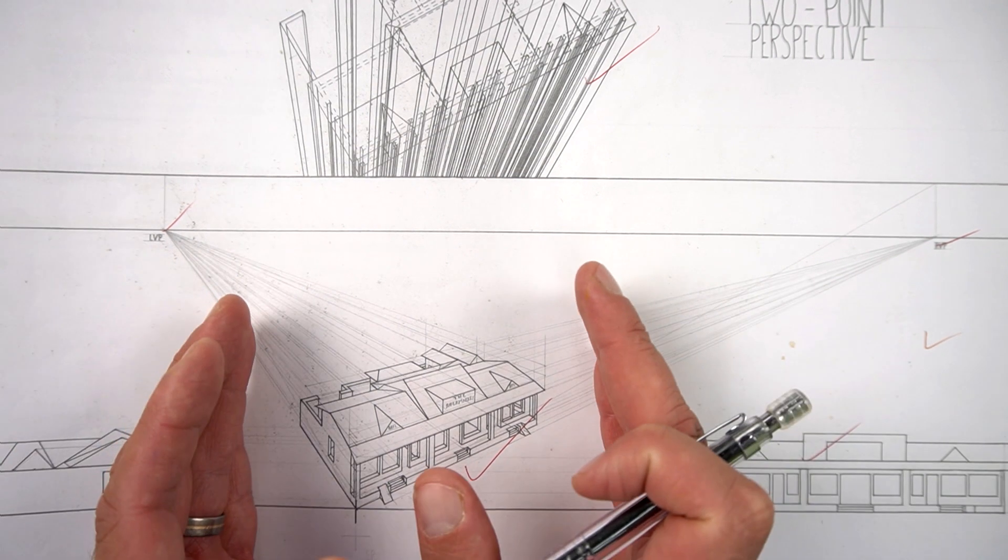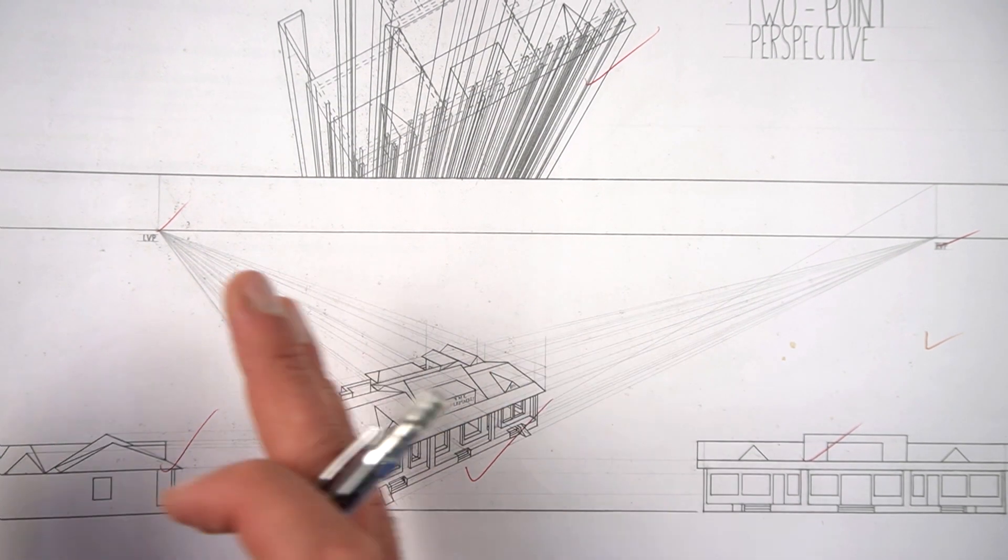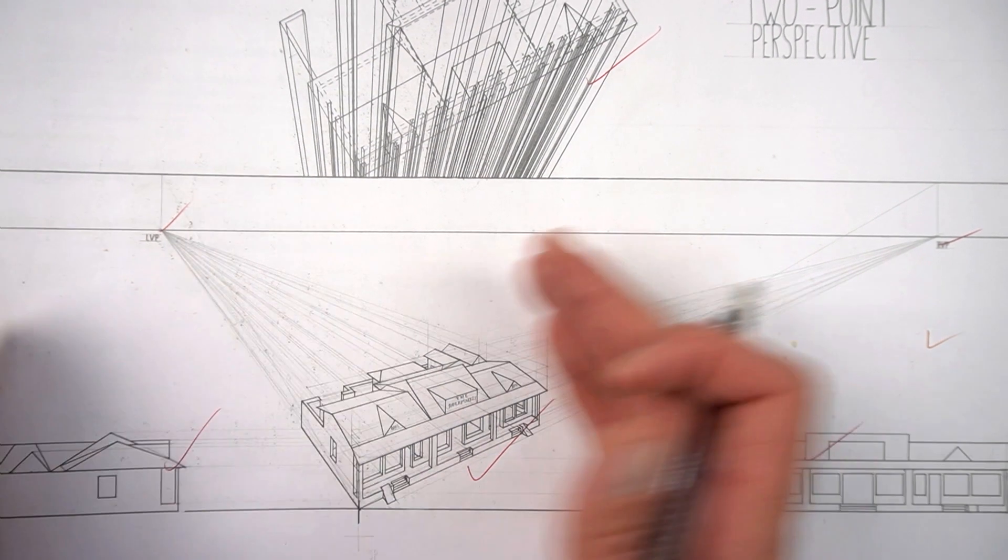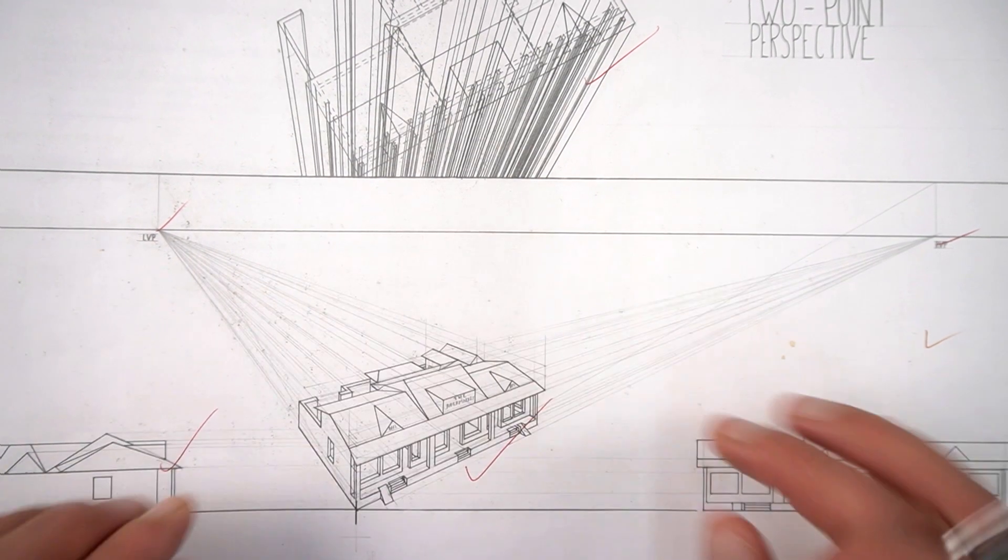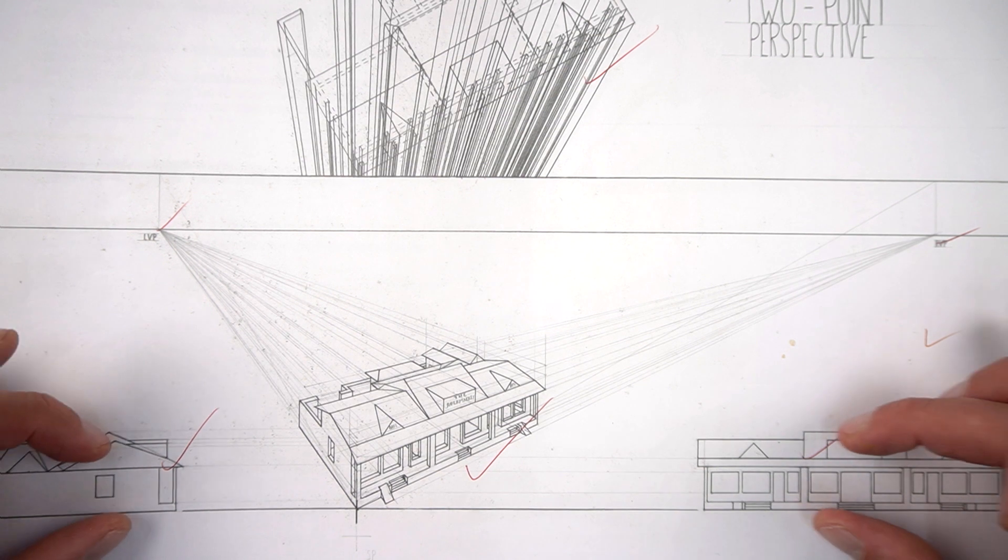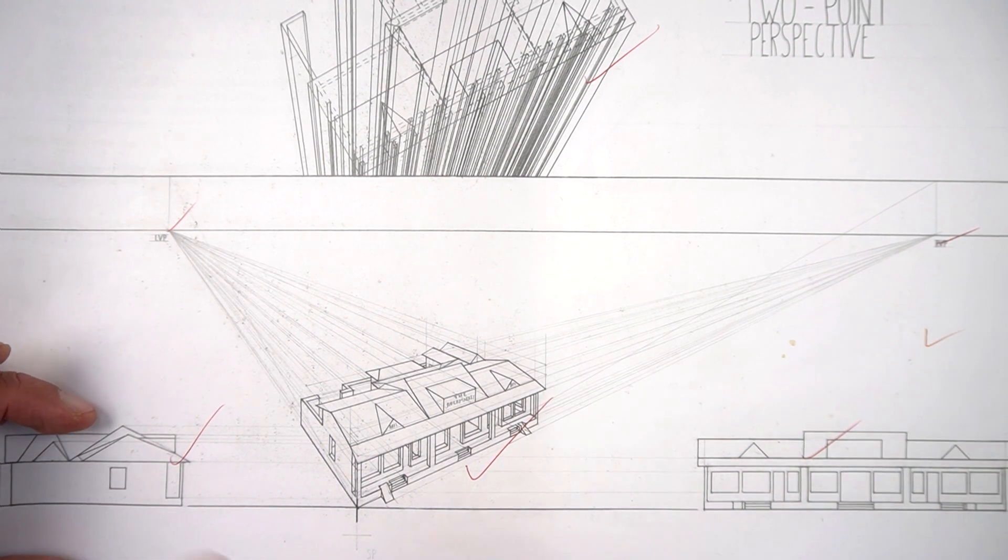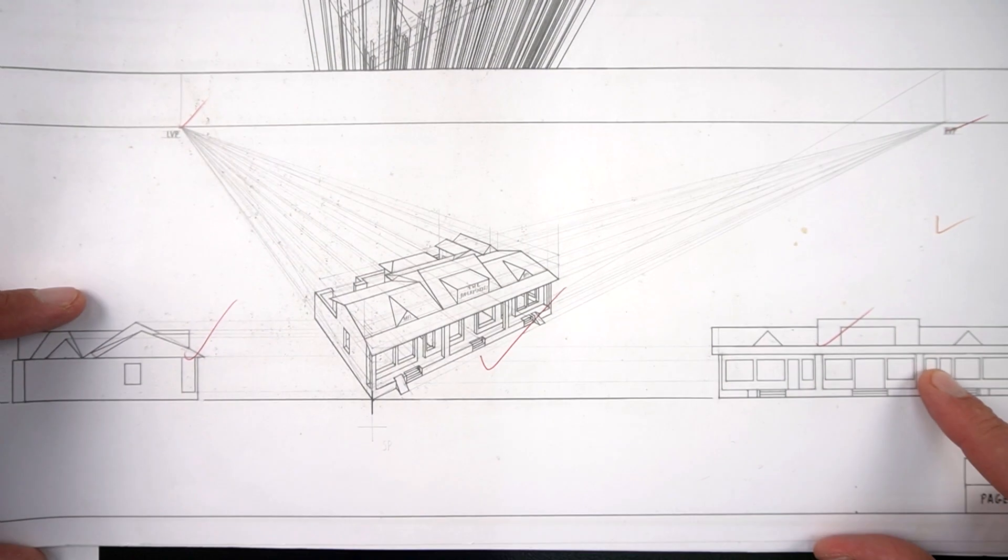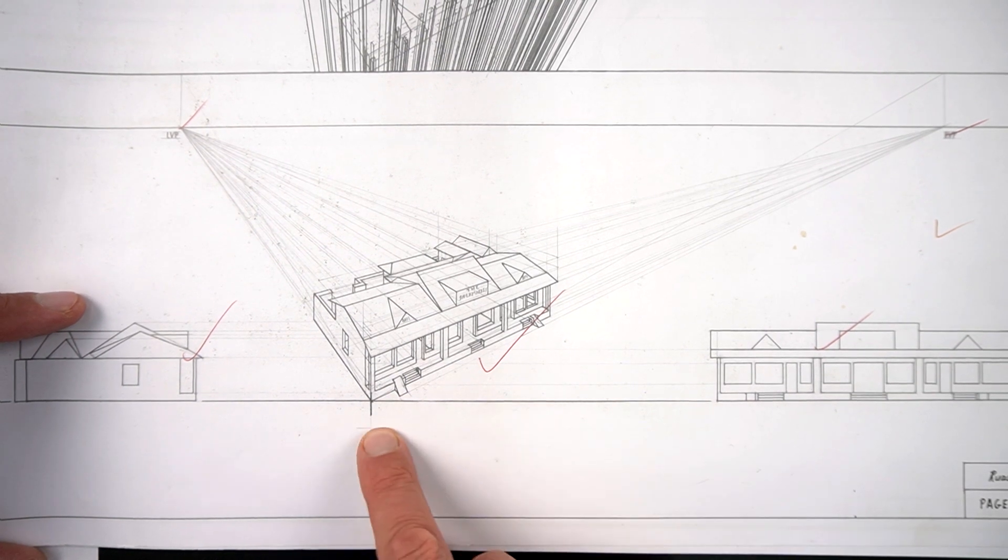Some learners hack it and they actually take their elevations that they've drawn and reduce that with a copier and they stick it in. That's one way of doing it, but I would really encourage you to draw the views on your ground line.